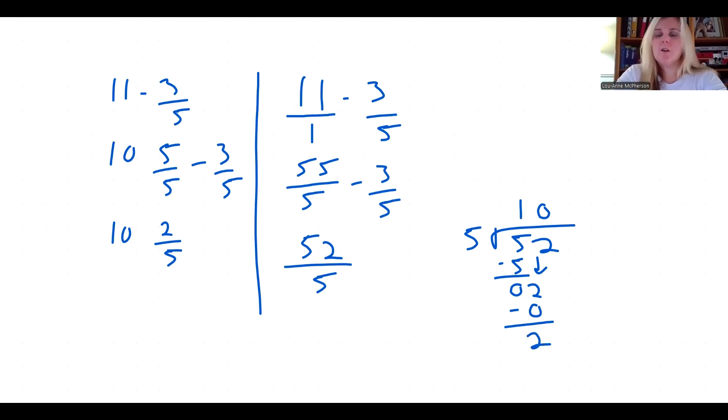Now in order to sort out the numbers in terms of where the numbers go to make a mixed fraction or a mixed number, remember you're going to be working like a clock and start at noon. Your answer is the whole number. So the answer is in the noon position. Then you're going to work around clockwise. Your numerator or the top number of your fraction is your remainder. You're going to work around clockwise again. And your divisor is your denominator. So we have 10 and 2 fifths.